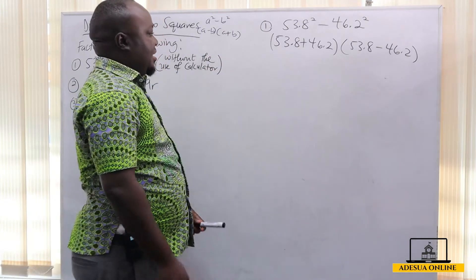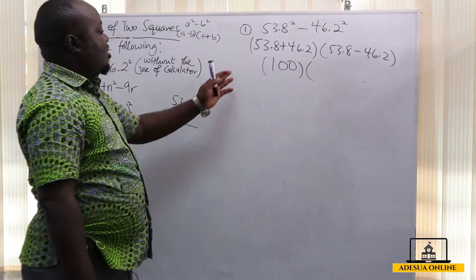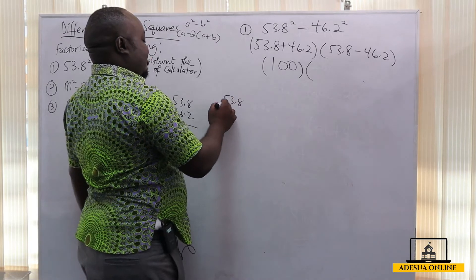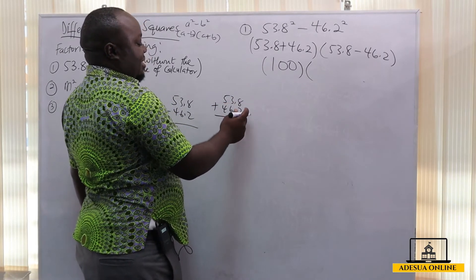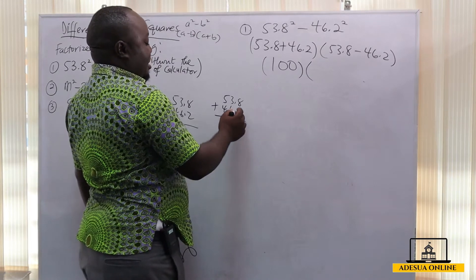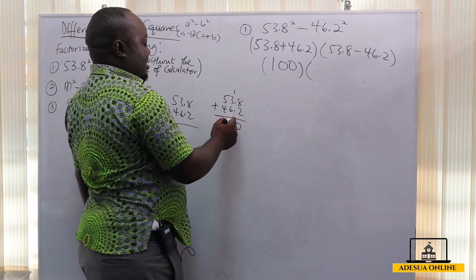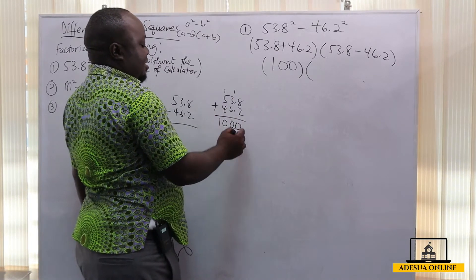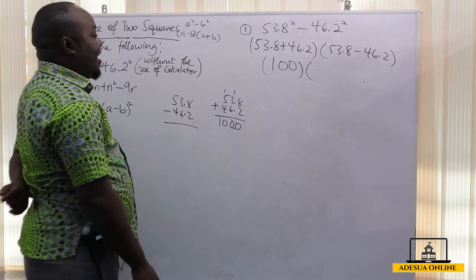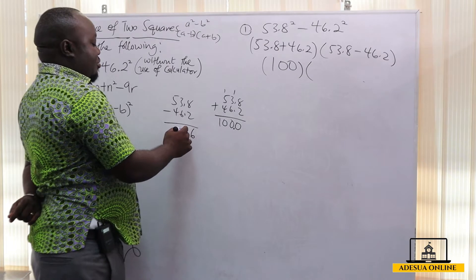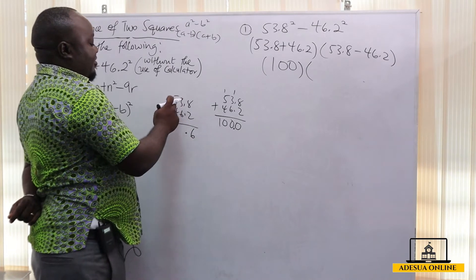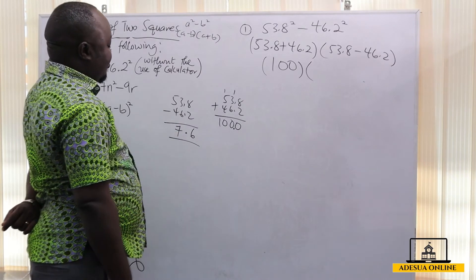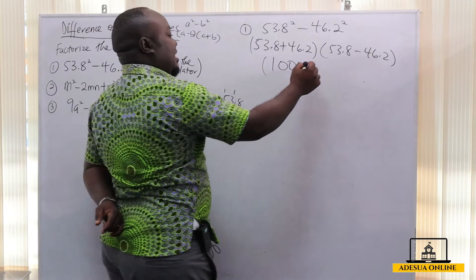Now if we add 53.8 + 46.2: eight plus two is ten, so zero carry one; six plus three is nine plus one is ten, zero carry one; so one plus five plus four is ten — that gives us 100.0, which is the same as 100. Then over here, 8 minus 2 is 6, and 53 minus 46 gives us 7, so we have 7.6.